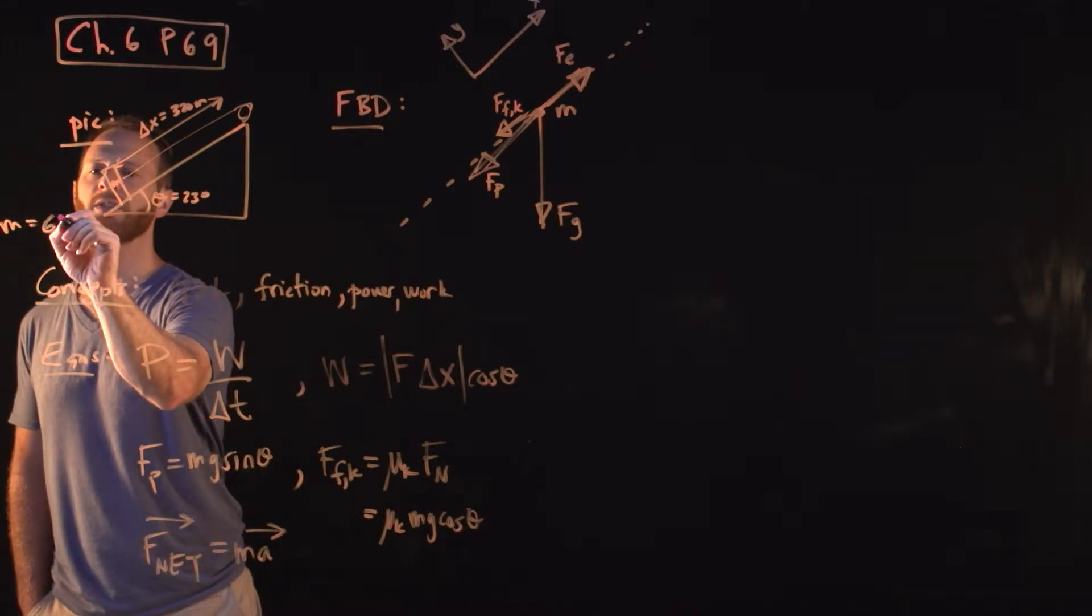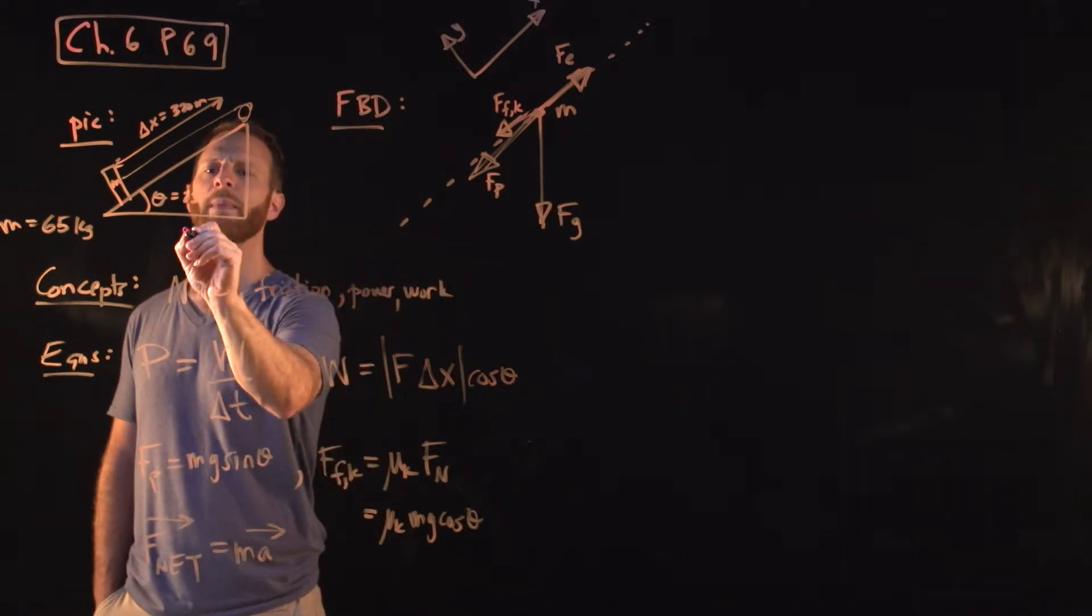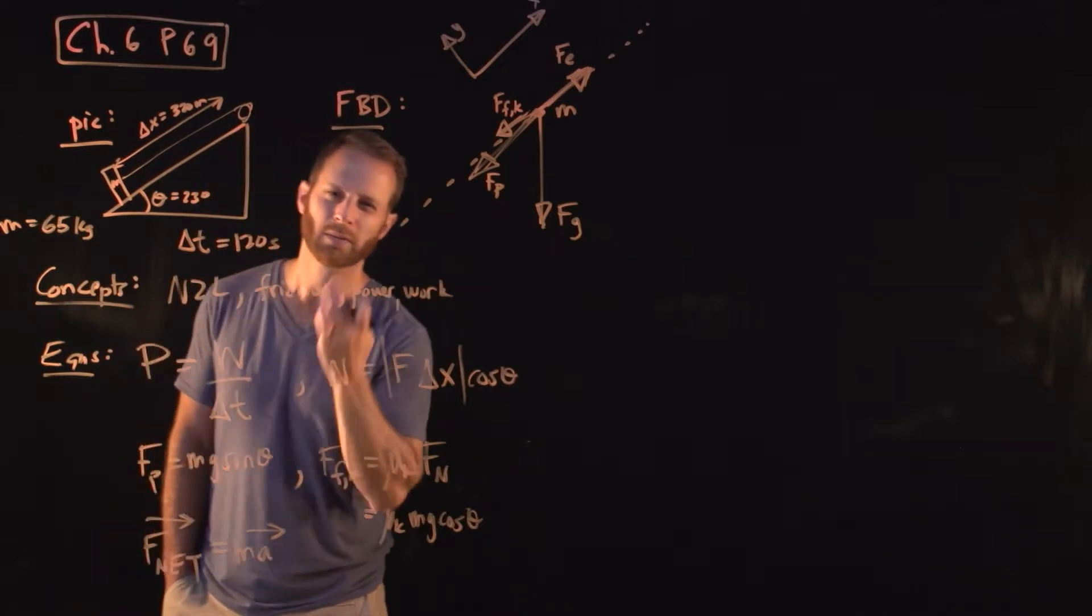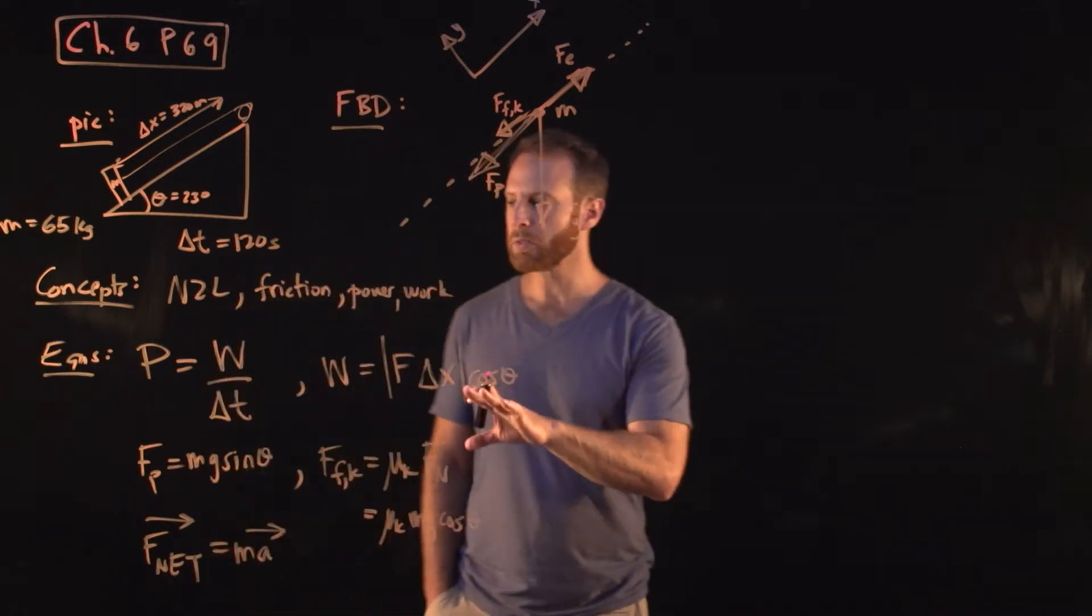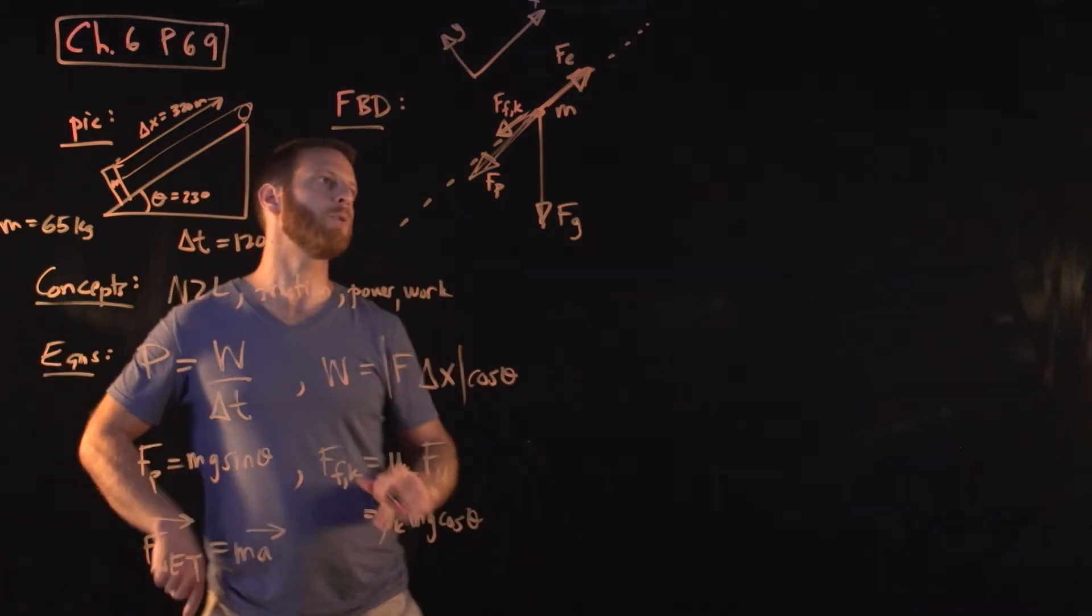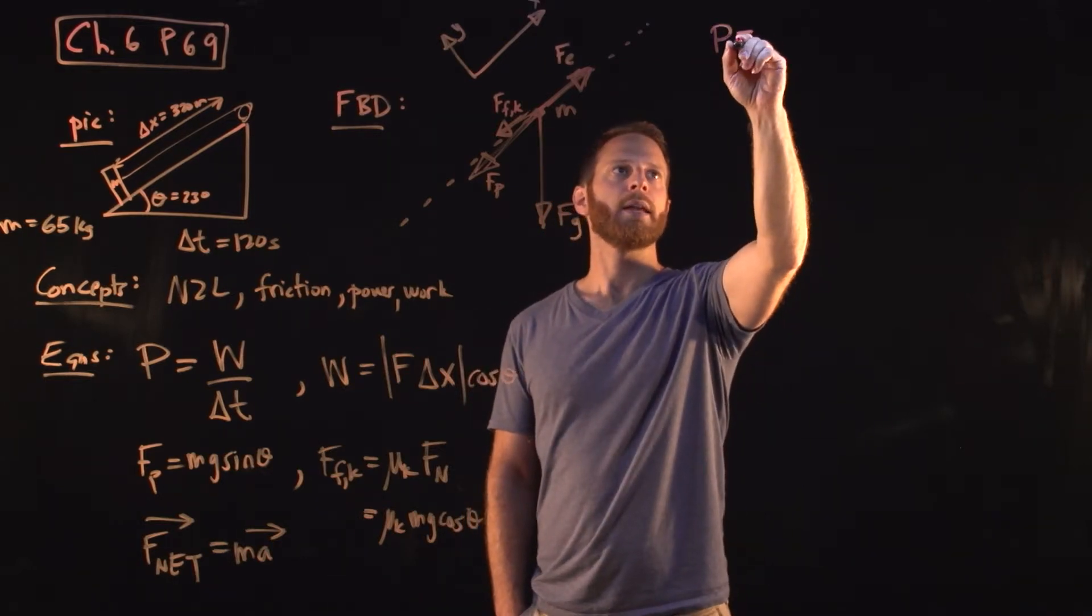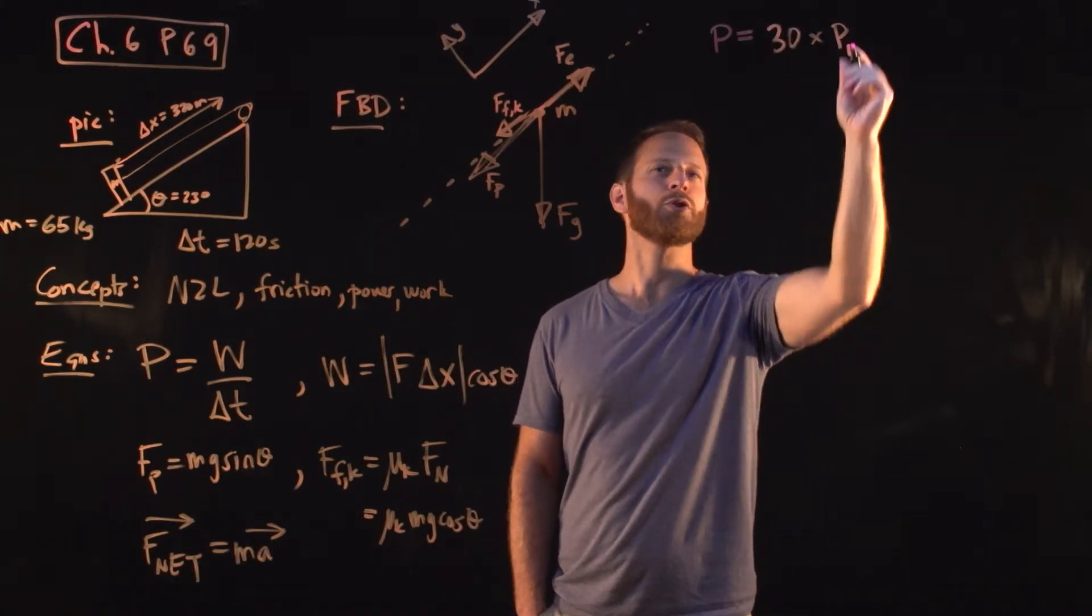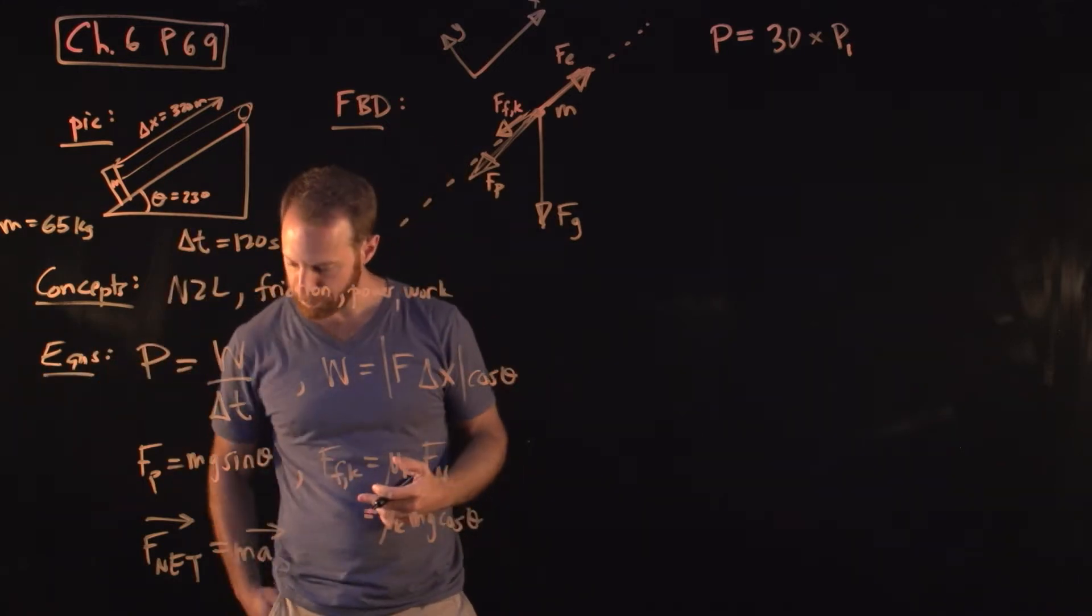And we have some knowns. We have the mass, the mass is 65 kilograms, the displacement distance is 320 meters, the angle is 23 degrees. The amount of time is 2 minutes, we'll write this as 120 seconds, because to get watts we'll need to have kilograms, meters, and seconds, et cetera. So why don't we do the following, the ultimate answer we're trying to get is the power required to get 30 people up the ramp. So let's just put this off to the side, the power that we want is going to be the number 30 times the power for one person, so I'll just call that P1, the power required to get one person up this ramp, that distance, in that amount of time.